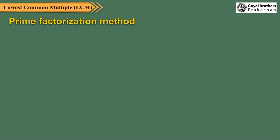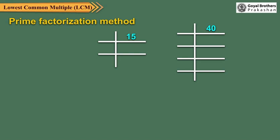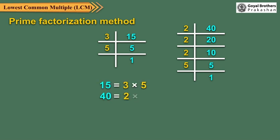Let us now find the LCM of 15 and 40 using the prime factorization method. Resolving the given numbers into prime factors, we get different prime factors of 15 and 40 are 2, 3 and 5. Here, 2 appears maximum 3 times in one of the prime factorizations. 3 appears maximum 1 time in one of the prime factorizations.